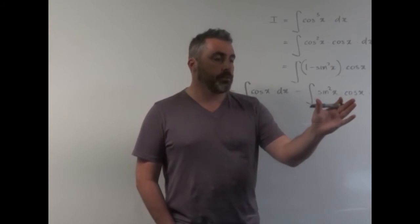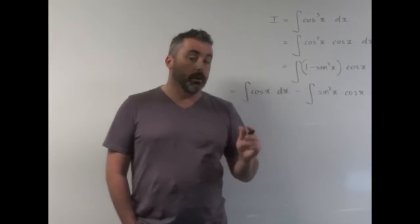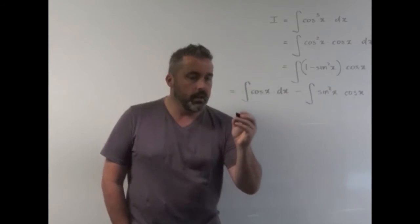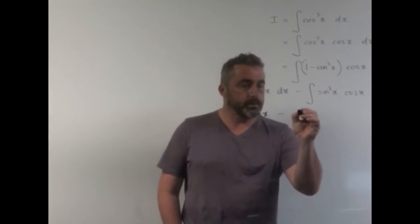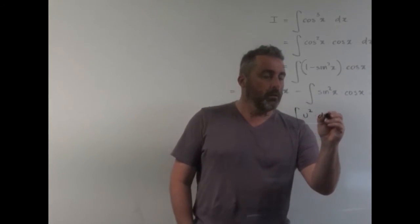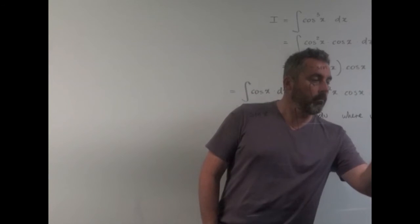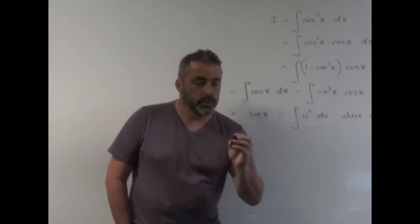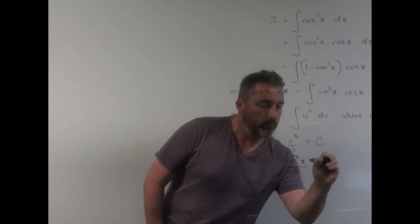That'll become a really nice easy integral — it'll just be u squared du, which gives us u cubed on 3. So this bit here is going to be sine x, minus the integral of u squared du. Finishing that up, which equals sine x minus sine cubed x on 3, plus C. And we're done.